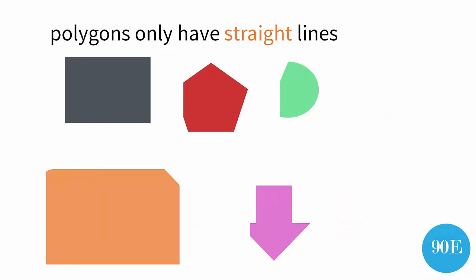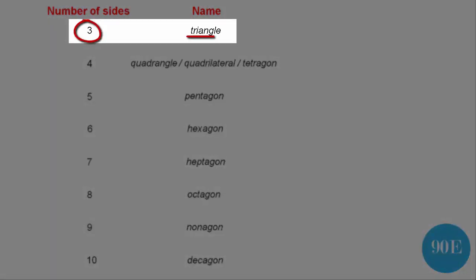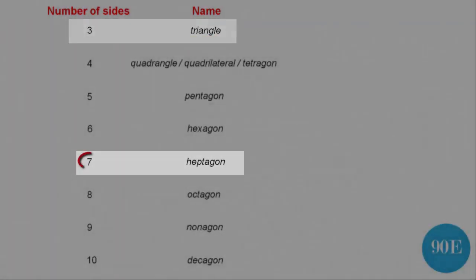This is because we can classify polygons in two ways. The first is by the number of sides that they have. So all polygons that have got three sides are called a triangle. All polygons that have got seven sides are called a heptagon. And so forth.